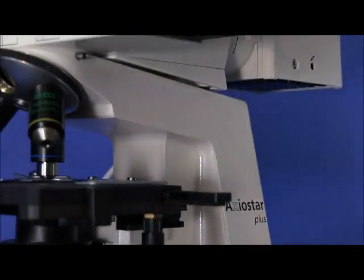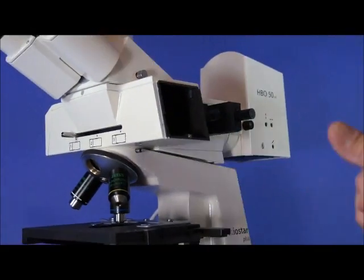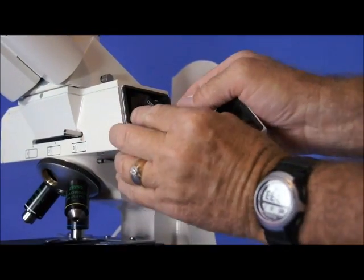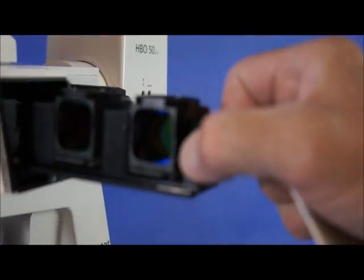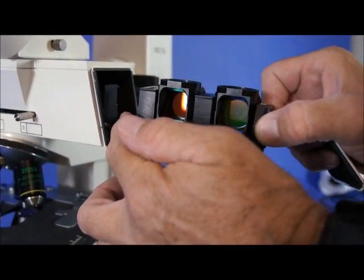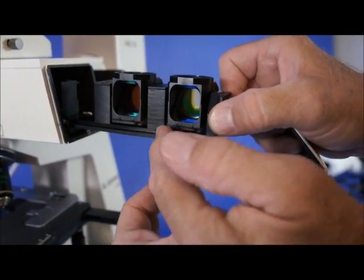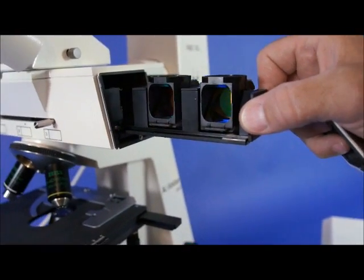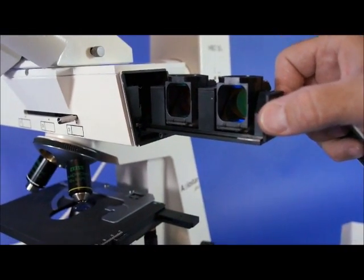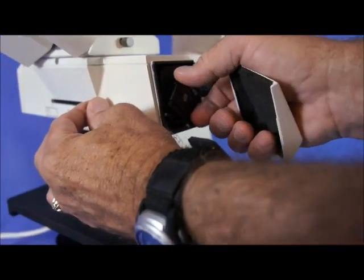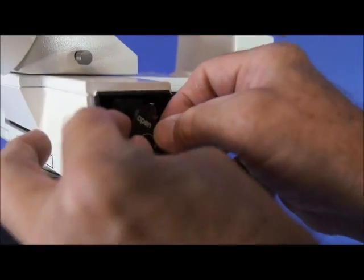Up here I want to show you the filter set and the slider for the different filters. You just simply turn the knob and you can slide the filters out. You can see the far left is blank. That would be the position you do bright field in. And then you have a Rhodamine filter and an FITC filter for fluorescein isothiocyanate. Just push that back in, turn the knob and it cannot be removed now.